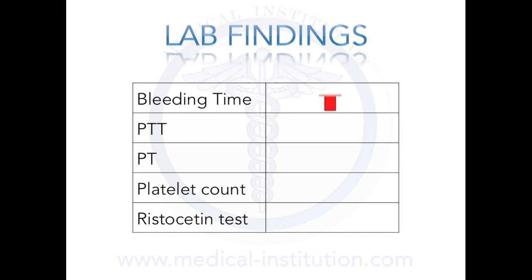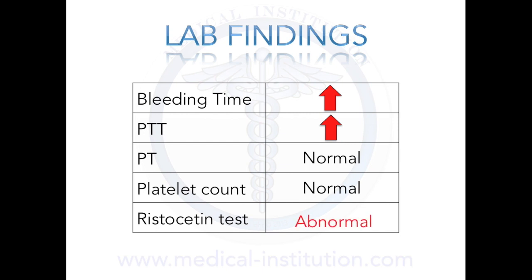Laboratory findings include increased bleeding time, due to poor platelet adhesion preventing quick sealing of the damaged blood vessel. Partial thromboplastin time (PTT) is increased, because von Willebrand factor is needed to stabilize coagulation factor 8 — without it, factor 8 stability is lost, increasing PTT. Prothrombin time (PT) is normal. Platelet count is also normal, since platelets are available but simply cannot aggregate due to von Willebrand factor deficiency. The ristocetin test will be abnormal.